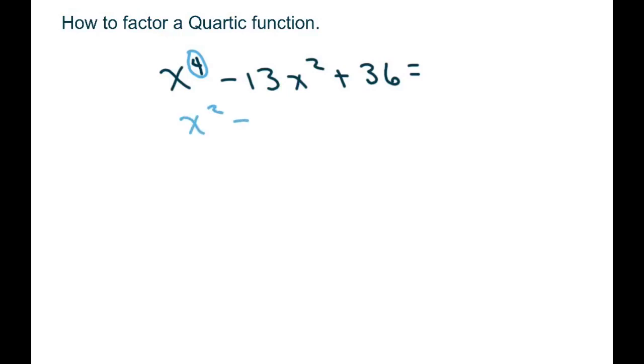If this was a 2, you know how to factor that. So, what we're going to do is factor this as this would be x minus 9 times x minus 4.